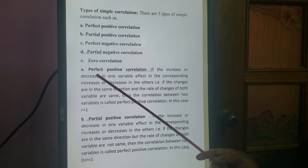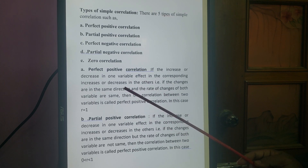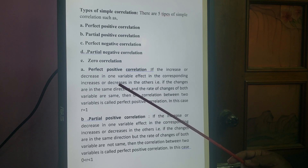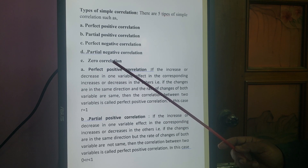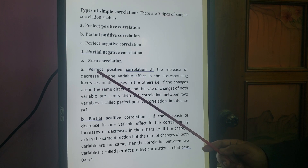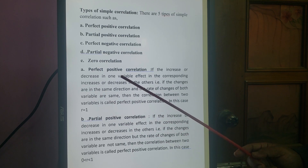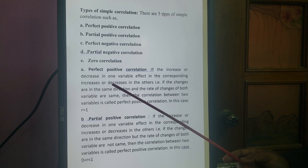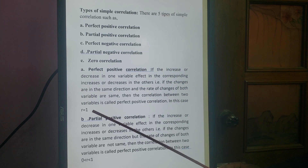If one variable increases, the other also increases; if one decreases, the other also decreases — and the amount of increase or decrease is the same. For example, if your father's income increases by 10,000 and his expenditure also increases by 10,000, both change by the same amount. This is perfect positive correlation, and R equals 1. The coefficient of correlation lies between −1 and +1.